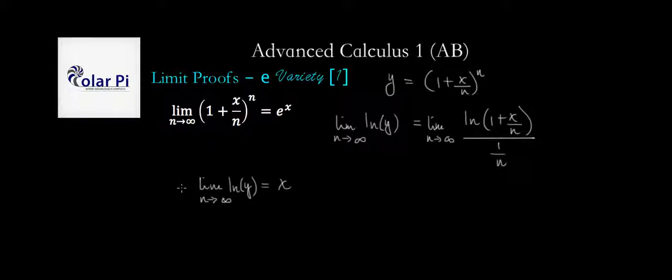But wait, the limit rules say that instead of this, we could write the natural log of limit as n goes to infinity of y. Okay, y, this here is the same as this here, but this here is the same as this here, so this here is the same as this here.